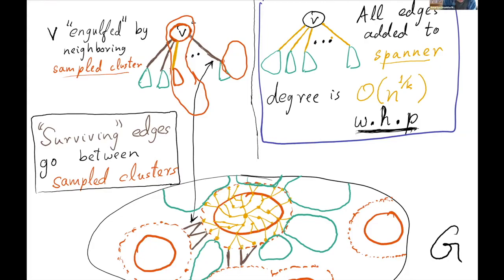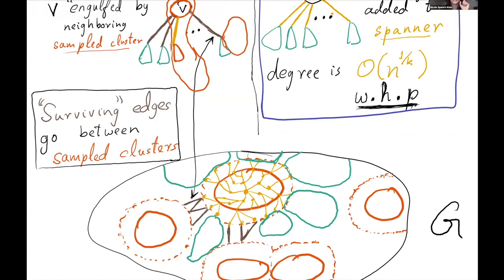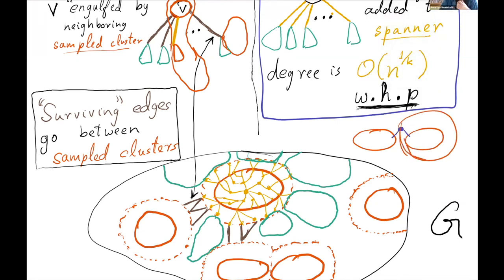Another thing I'm trying to convey is that the spanner has an internal structure like a tree. Every time a cluster grows, the depth of the tree increases by one unit — it grows one unit to engulf all its neighboring clusters. Meanwhile, some clusters can stop being clusters because they were no longer sampled. The clusters that are sampled grow as trees and may have edges between their endpoints.